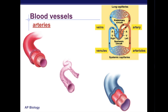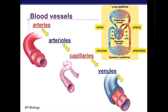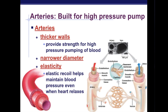Arteries bifurcate to form arterioles, which bifurcate further into capillaries. The capillaries then converge upon the venules, and the venules converge to form the veins. Arteries have thicker walls, which provide strength against the high pressure of the pumping blood. They also have a slightly more narrow diameter and a feature of elasticity that allows for recoil as blood flows through the body under that strong force from the heart. The artery can withstand that force and then recoil when the heart relaxes, rather than remaining in a stretched-out shape.